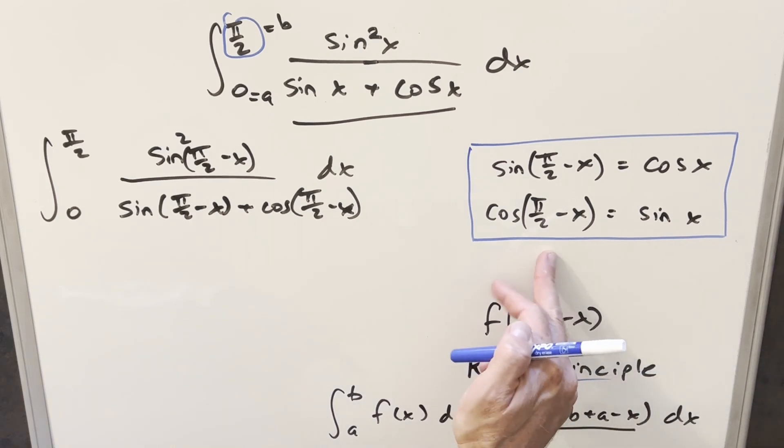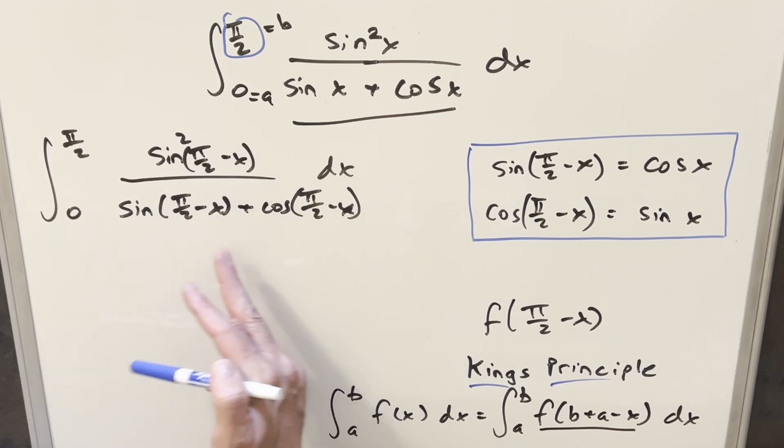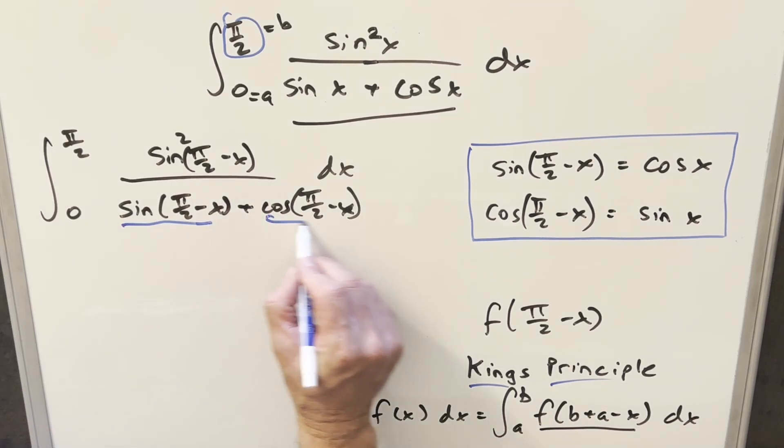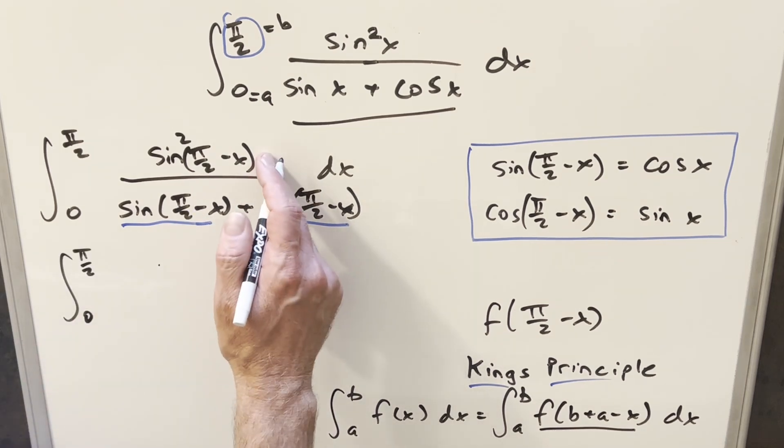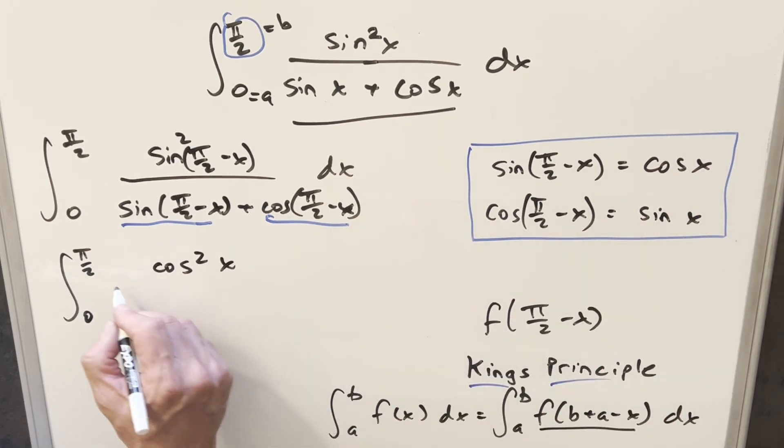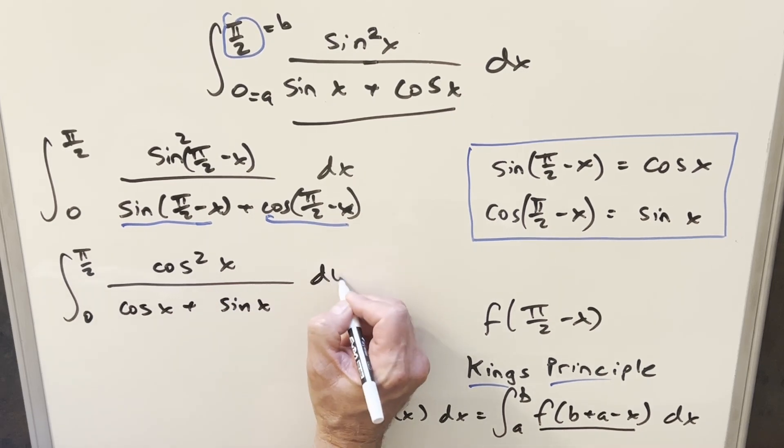But now over here to the right, I have our complementary angle formula for sine and cosine. And what we're going to do is we'll use this to simplify everything, because it's kind of a mess with the angles right now. And so we have our value for this, we have our value for this, this here is the same as this. So going ahead with this using the formula, the numerator is just going to become cos²x using this one. And then in the denominator, this is going to become cosx plus sinx dx.